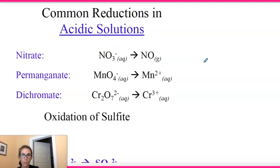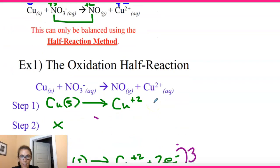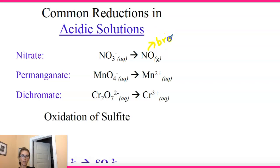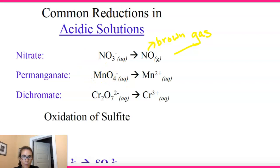Here are some things you'll want to remember — common reductions in acidic solution. The nitrate ion goes from NO₃⁻ to NO gas (nitrogen monoxide), which happened in our example. That NO is a brown gas, something to recognize. Permanganate also gets reduced in acidic solution, going from +7 to +2. The permanganate ion is purple in solution — another thing to learn to recognize.